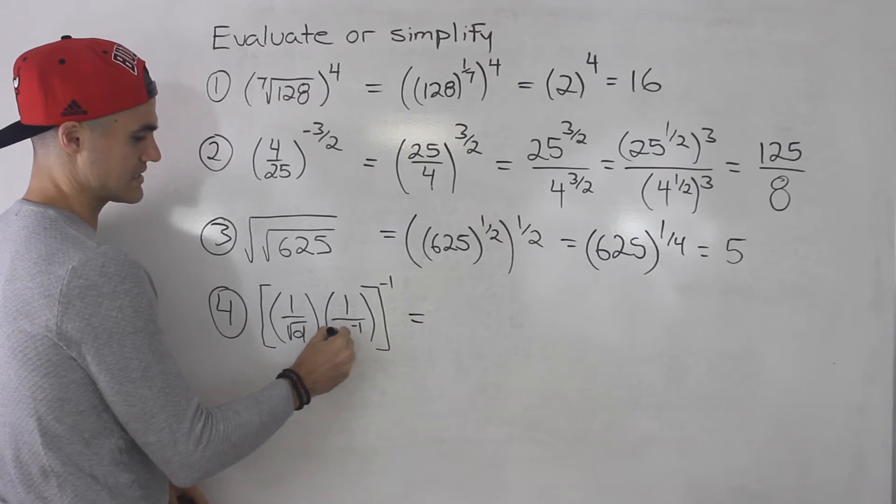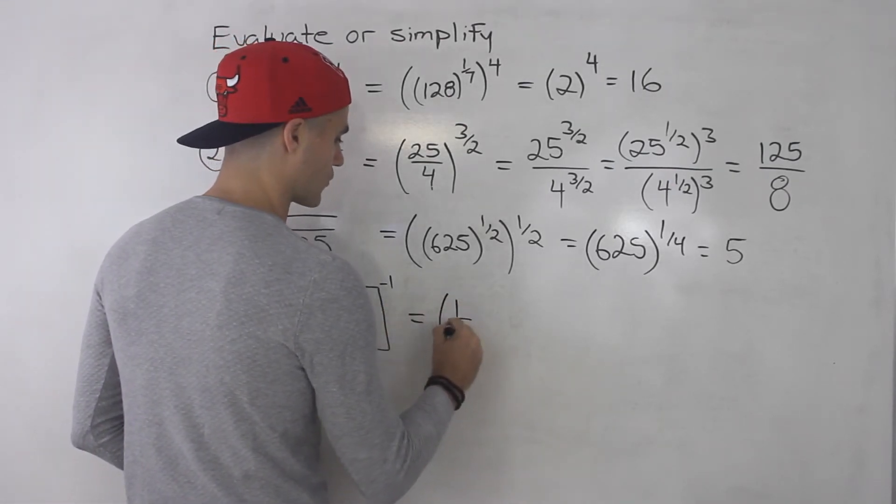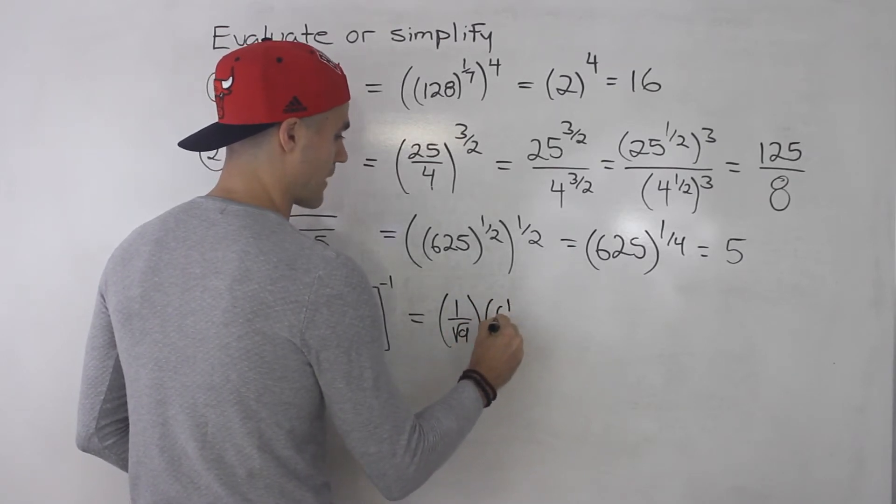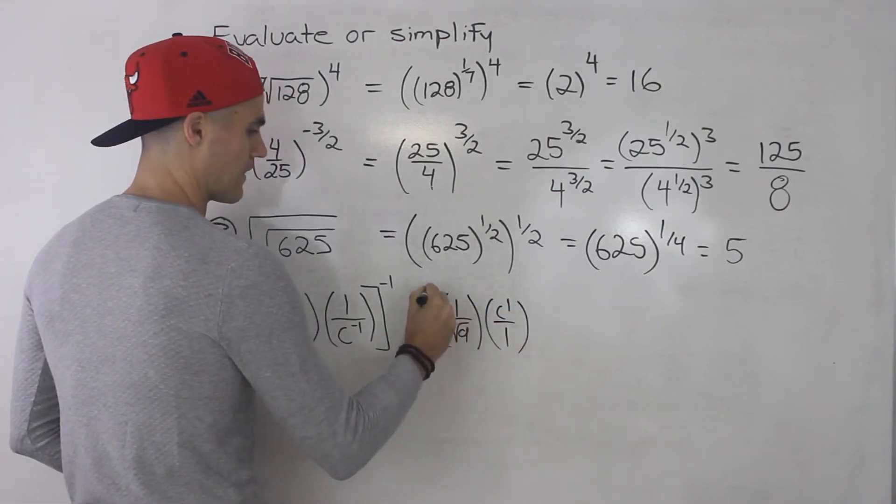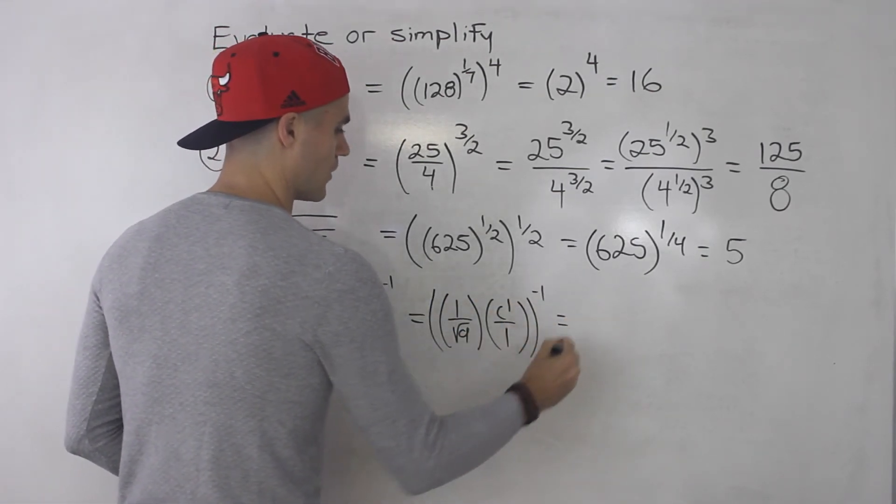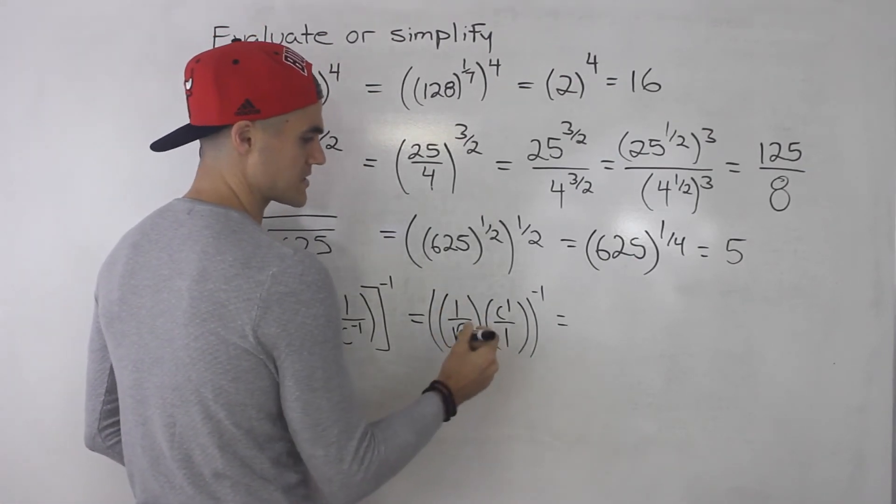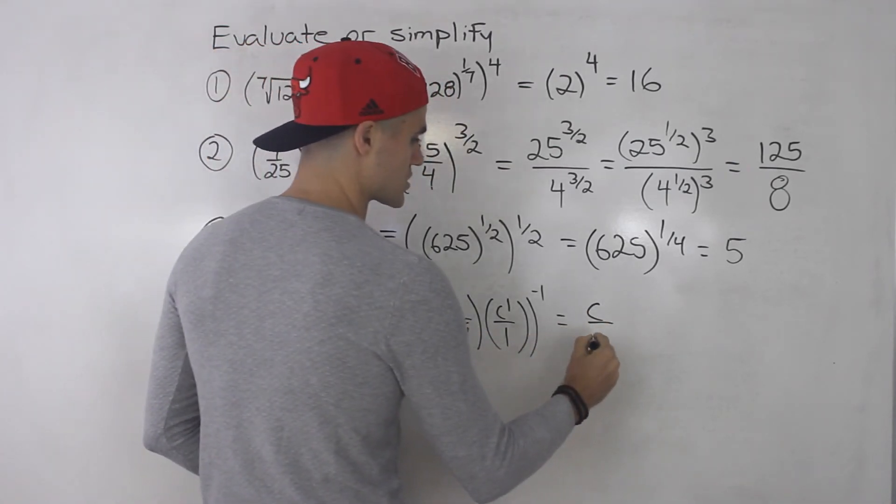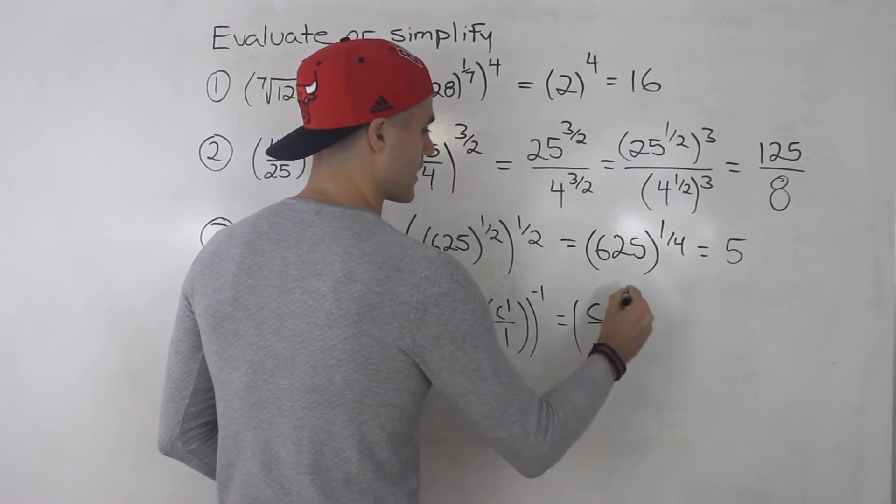So I'm going to bring this c to the negative 1 up. So basically, we'll have 1 over root d to the power of c to the power of positive 1, right? Because I brought that up. And then that's going to be all to the power of negative 1. Then notice these two we can multiply together. So 1 times c to the power of 1 is just c and then square root of d times 1 is just square root of d. And this is all to the power of negative 1.